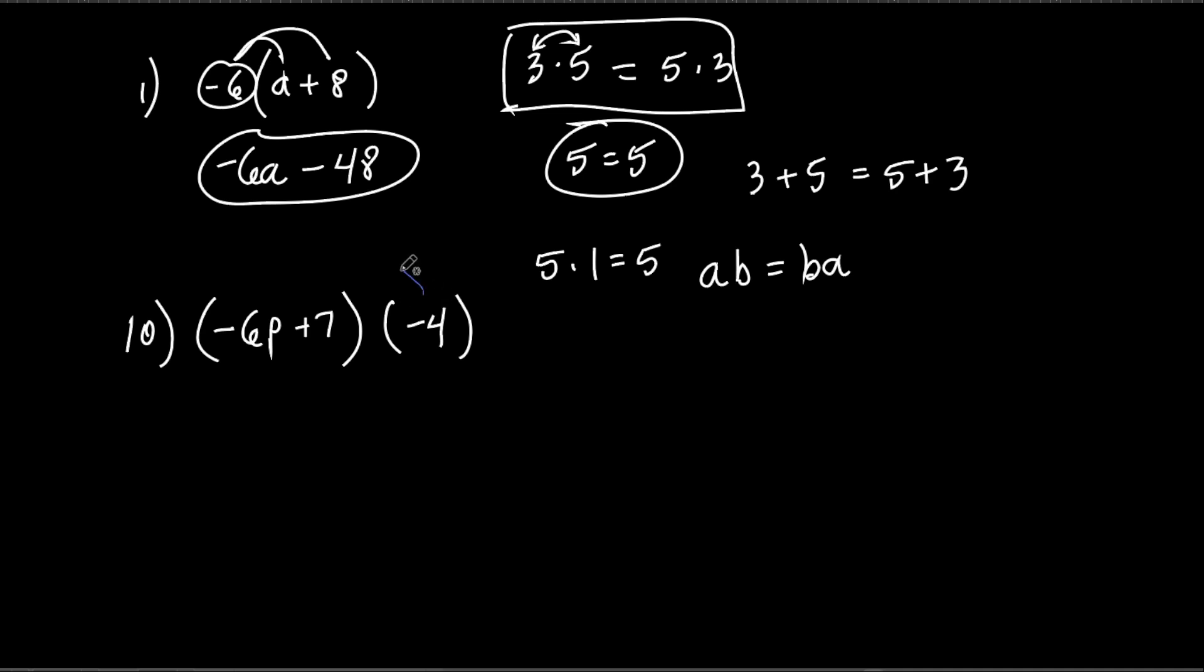So now what can we do here? I'm going to take that negative 4 and let's distribute it this way, from right to left this time. It's the same thing, isn't it? So it's negative 4 times negative 6p. What's negative times a negative? Positive. 6 times 4 is 24, and then p. Let's do the next one. Negative 4 times 7. What's negative 4 times positive 7? It's negative 28. So we put a minus there for the negative. You could if you wanted to put plus negative 28, that'll work, it'll be fine, I wouldn't mark it wrong. But it just looks a lot better like that. Do you agree? Yeah, instead of having the two signs next to each other.